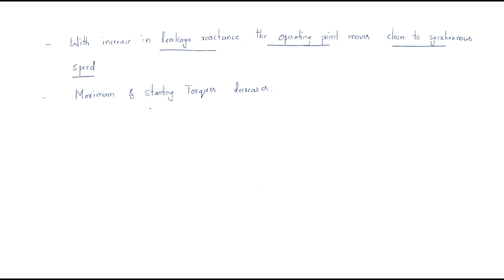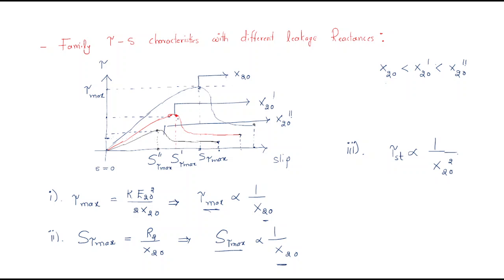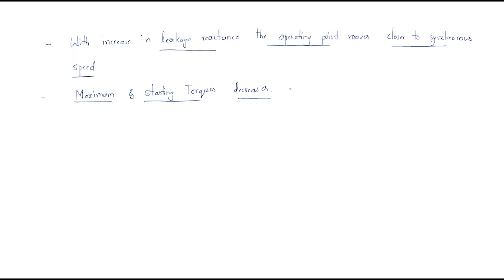To summarize the effects of different leakage reactances: if the leakage reactance increases, the maximum torque decreases, the slip at torque maximum also decreases, and the operating point moves nearer to synchronous speed. Both maximum torque and starting torque decrease with increasing leakage reactance. This is the important conclusion from this family of torque-slip characteristics.